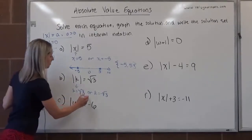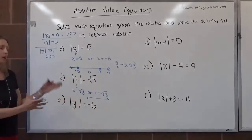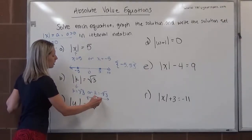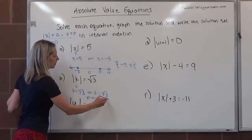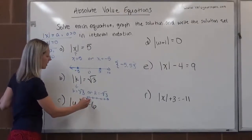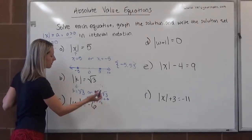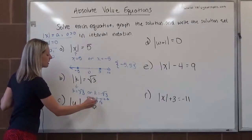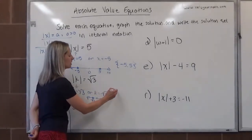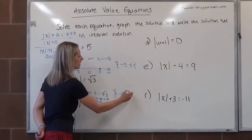If we want to graph it, we do want to be careful. You can't label tick marks with square root of 3, square root of 2, and square root of 1 because those aren't evenly spaced. I would just say here's negative root 3, here's 0, here's the square root of 3. We put a dot over negative root 3 and a dot on the square root of 3. In interval notation, because these are discrete points, we would have negative square root of 3, comma, square root of 3.